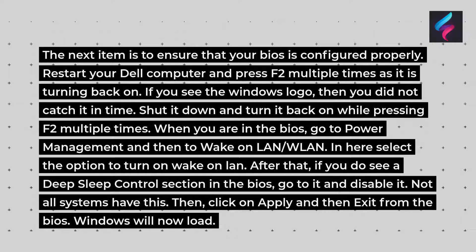The next item is to ensure that your BIOS is configured properly. Restart your Dell computer and press F2 multiple times as it is turning back on. If you see the Windows logo, then you did not catch it in time — shut it down and turn it back on while pressing F2 multiple times. When you are in the BIOS, go to Power Management and then to Wake on LAN. Select the option to turn on Wake on LAN. After that, if you do see a Deep Sleep Control section in the BIOS, go to it and disable it. Not all systems have this. Then click Apply and exit from the BIOS. Windows will now load.